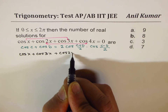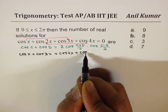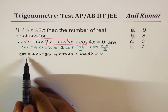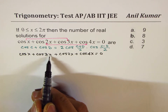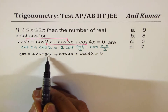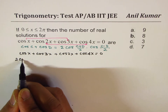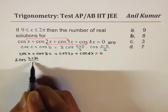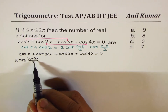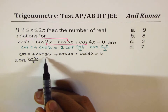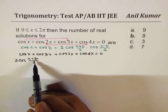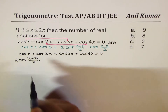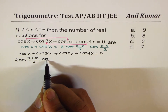Now applying the sum-to-product identity to cos x + cos 3x: add them and divide by 2, so we get 2·cos((x + 3x)/2)·cos((3x − x)/2). Since cos(−x) = cos x (it's an even function), this gives us 2·cos(2x)·cos(x).